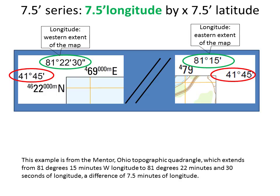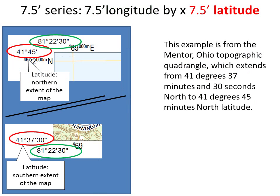The name '7.5-minute series' relates to the geographic extent of these topographic maps — the longitude extent and latitude extent is 7.5 minutes by 7.5 minutes. You can see this in the upper left and right-hand corners of the map. This particular map starts at 81 degrees, 15 minutes, 0 seconds west on the right-hand side, and extends 7.5 minutes west to 81 degrees, 22 minutes, 30 seconds. In terms of latitude, it starts at 41 degrees, 37 minutes, 30 seconds, and extends north to 41 degrees, 45 minutes north — again, a difference of 7.5 minutes.